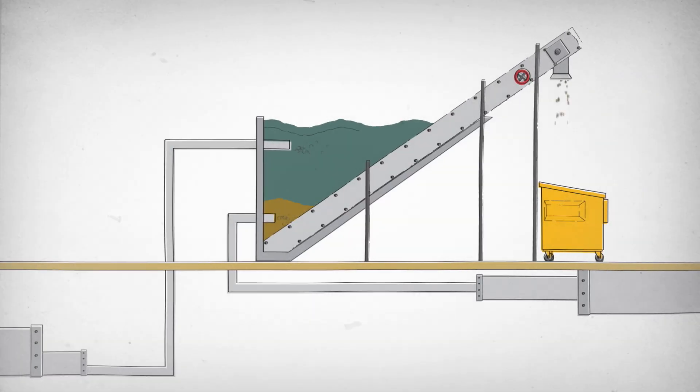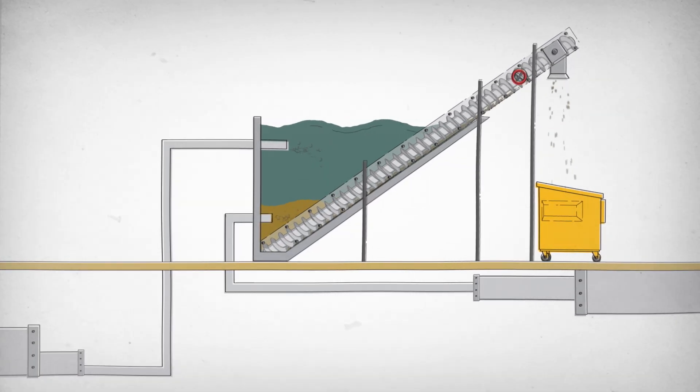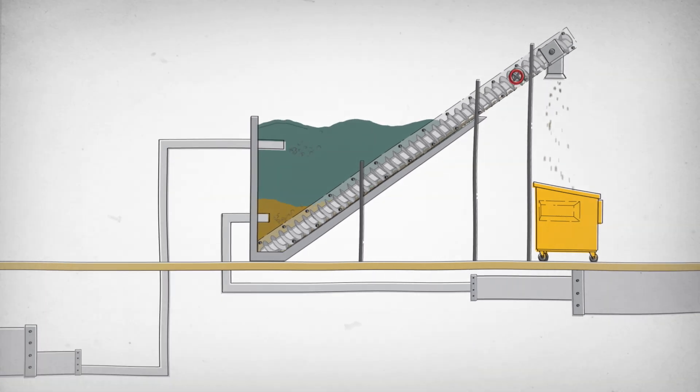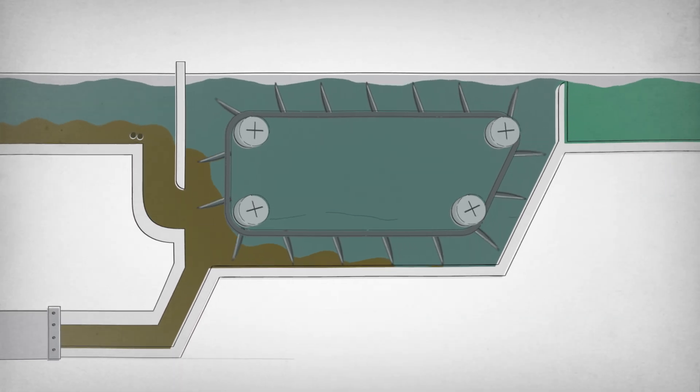Everything goes into these tanks, where the dirty water is separated from that poopy solid that sinks to the bottom. This solid is mostly poop, but includes leftover toilet paper, too.